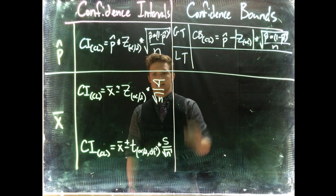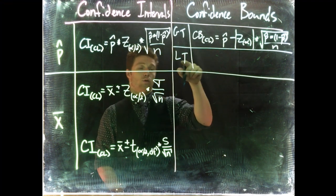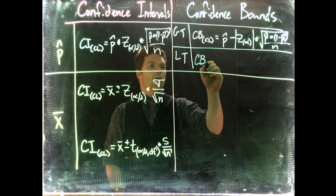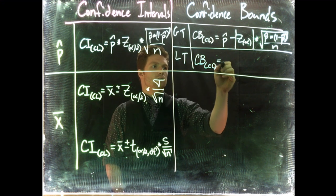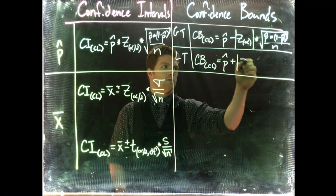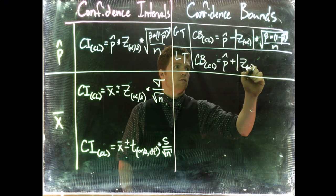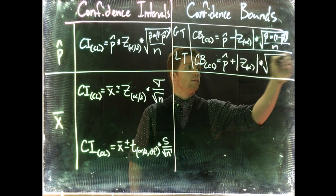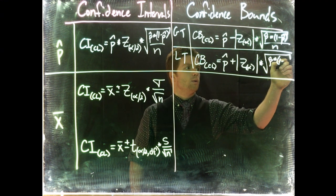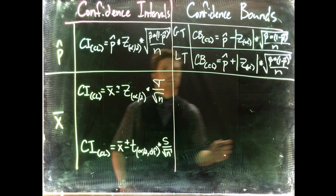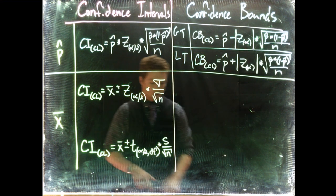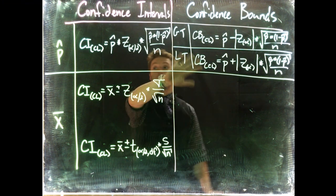For the less than confidence bound, the equation is identical except this time we plus z(α), multiplied by the square root of p-hat times 1 minus p-hat divided by n. Those are our confidence bound equations for the sample when we're talking about proportions.